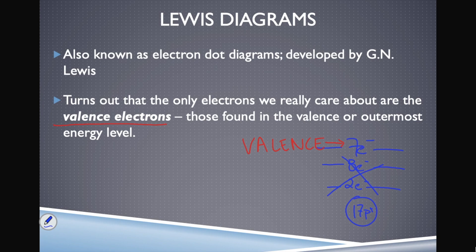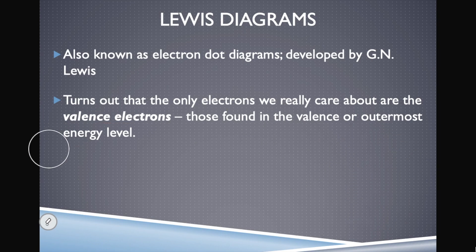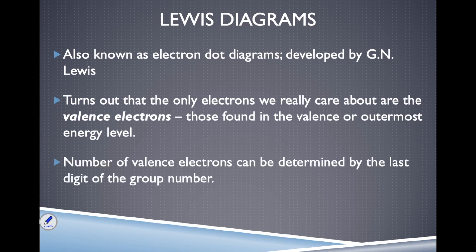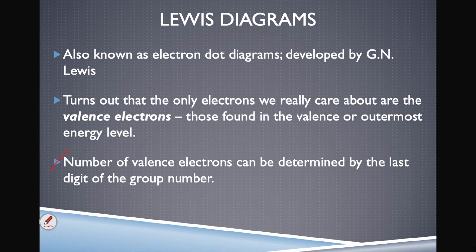With Lewis diagrams we only care about valence electrons. And Lewis didn't even write E-minus to abbreviate electrons — he represented electrons as just dots. We need to figure out how many valence electrons an atom has without going through all that filling-order math. There is a faster way.